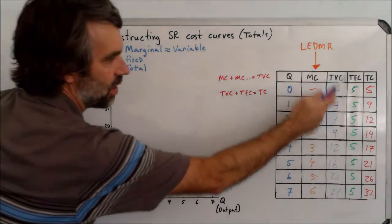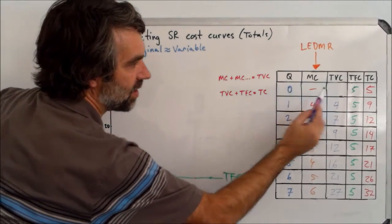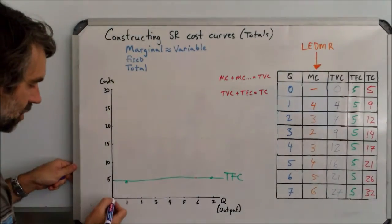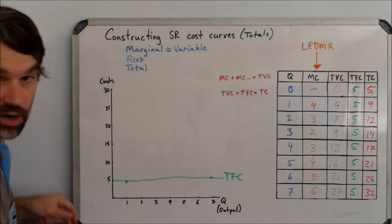We'll start with total variable costs first. Remember, when the quantity is zero, the total variable costs are also zero. So this cost curve is going to start right there at the origin.